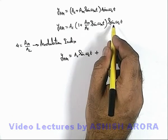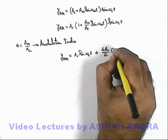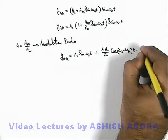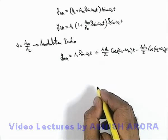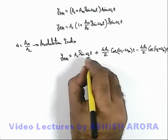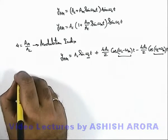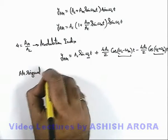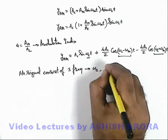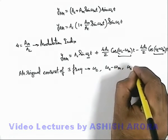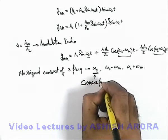This product of two sine functions can be further split into cosine form. It can be written as: Ac·sin(ωct) + (μAc/2)·cos((ωc − ωm)t) − (μAc/2)·cos((ωc + ωm)t). Now in this function you can see there are three frequencies: one is ωc, another is ωc − ωm, and one is ωc + ωm. So the amplitude modulated signal consists of three frequencies: ωc, ωc − ωm, and ωc + ωm. Here ωc is the carrier frequency on which we are imposing the baseband signal.